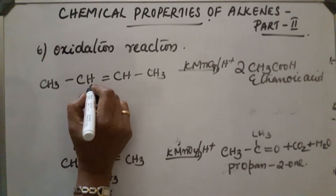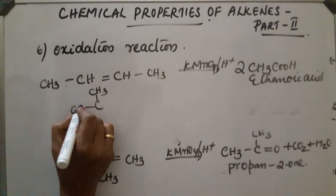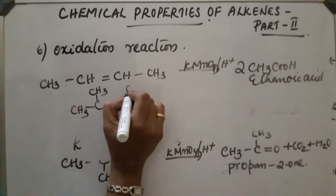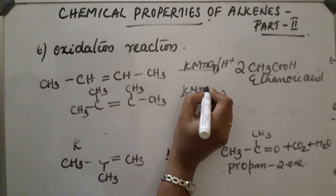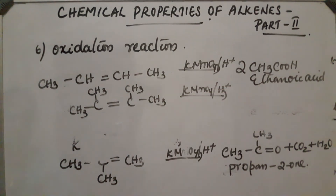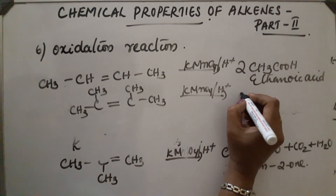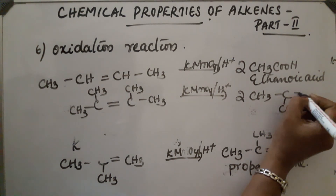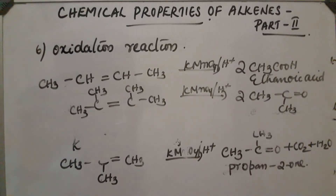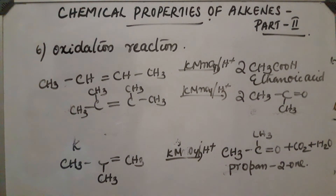In another example, instead of H we have a CH₃ group on the alkene. In the presence of acidic KMnO₄, the reaction takes place and a ketone is obtained. Degradation occurs and propan-2-one (propanone) is again the product — two molecules of this ketone are obtained. This concludes the discussion on oxidative degradation of alkenes, and the next property will be covered in the next class.